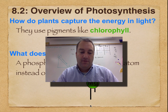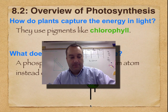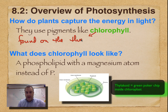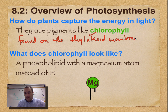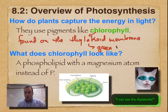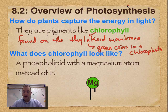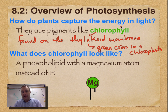Plants use chlorophyll to capture the energy from sunlight, but where do you find chlorophyll? Chlorophyll is found on the thylakoid membrane. If you don't know what a thylakoid is, think of it like green coins inside a chloroplast. Chlorophyll is green, it's found on the green coins inside a chloroplast, and those green coins are called a thylakoid.